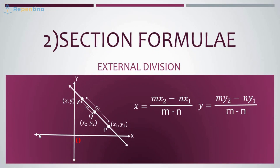Now for external division, the point Z is dividing the line segment PQ externally in the ratio m : n. The coordinates of Z are: x equals (mx2 minus nx1) / (m minus n), and y equals (my2 minus ny1) / (m minus n).